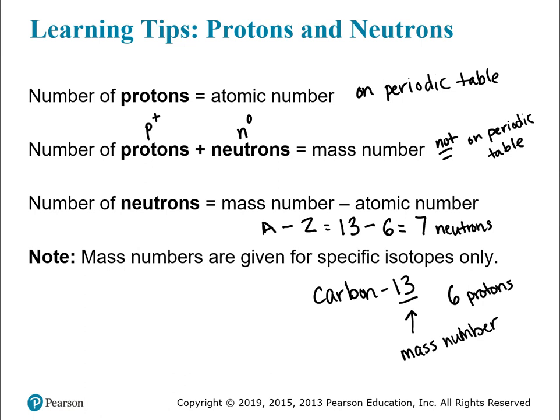We only really talk about mass numbers for specific isotopes. Isotopes are atoms of the same element that have different mass numbers — they have the same number of protons but a different number of neutrons. Atoms of an element are similar but not exactly the same because they may have a different number of neutrons.